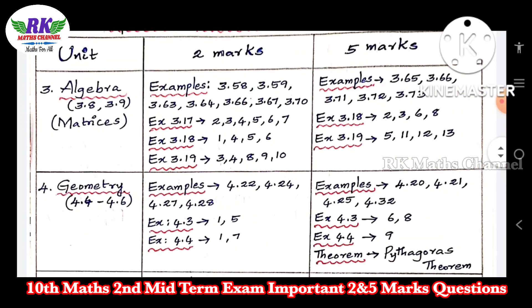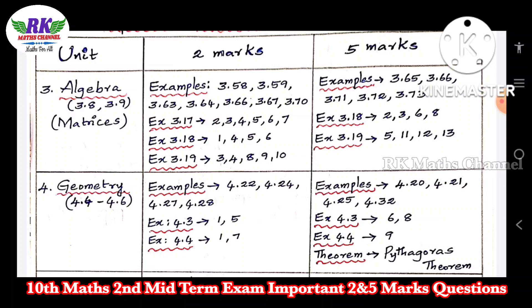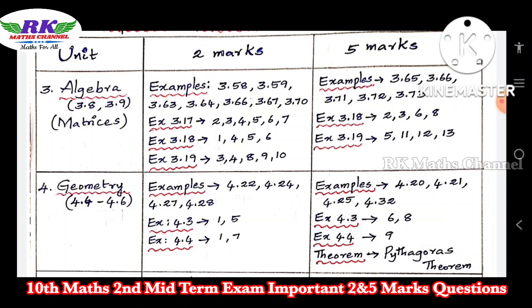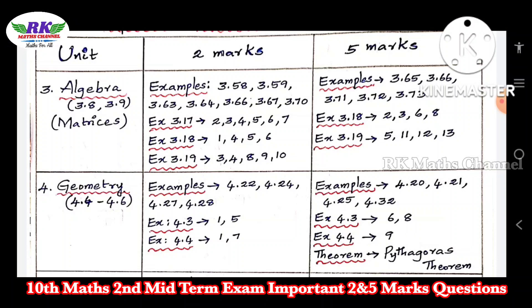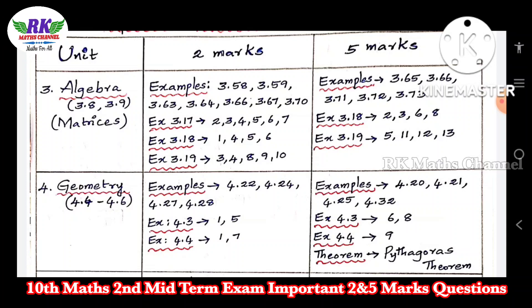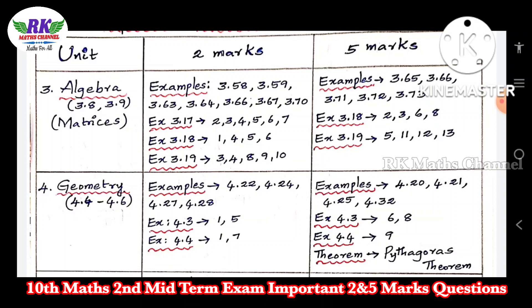Next is geometry — basic proportional theorem, angle bisector, and tangents. Key examples include 4.22, 4.24, 4.27, and 4.28. Important exercises are 4.3, 4.4, and 6.8, including problems 9 and 3.2.